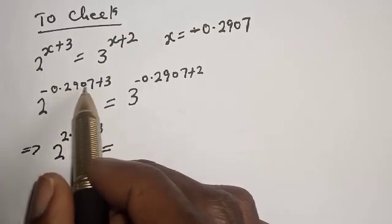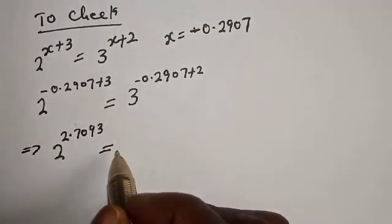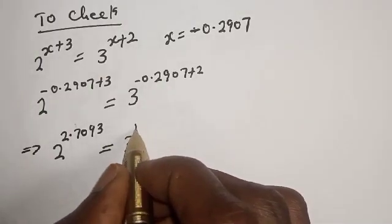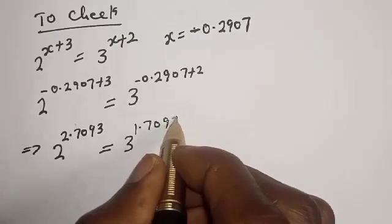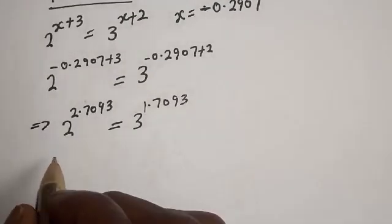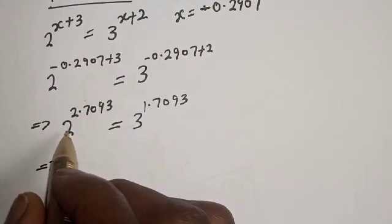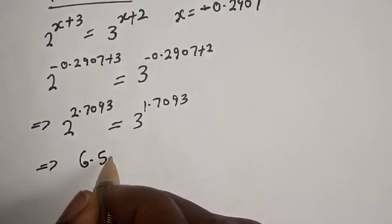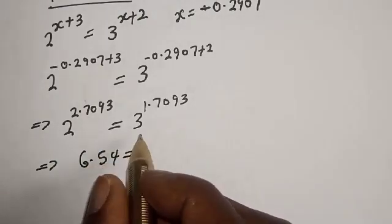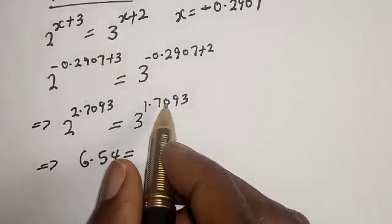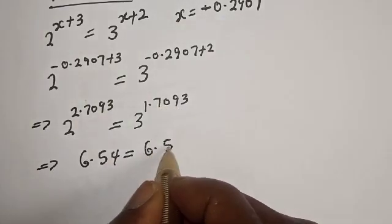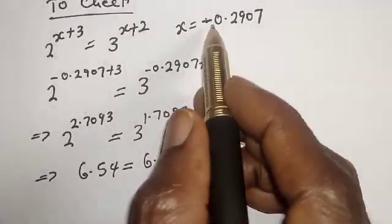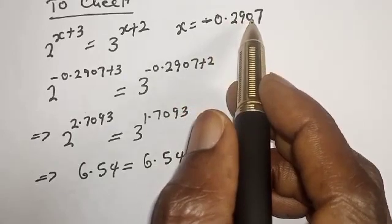Evaluating both sides confirms that the left-hand side and right-hand side are approximately equal, giving a value of about 6.54. We satisfy the given equation at s equal to negative 0.2907.